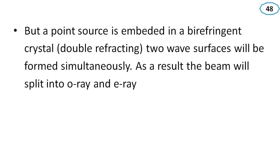Now let's discuss the anisotropic material — a birefringent material or double-refracting crystal. The case will be different, because in a double-refracting crystal there will be two rays: one is the ordinary ray and another is the extraordinary ray — the O-ray and E-ray. At any point in this material, two wave surfaces will be formed simultaneously: one due to the O-ray and another due to the E-ray.